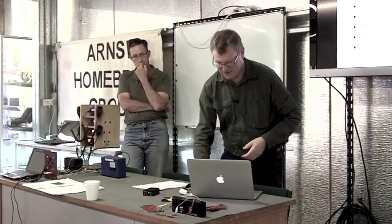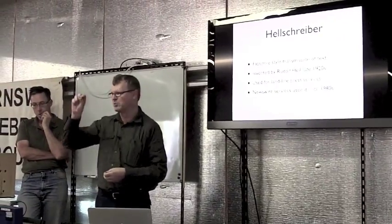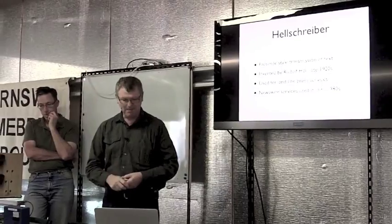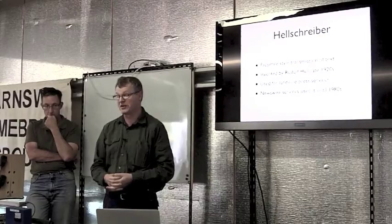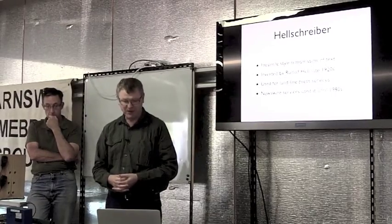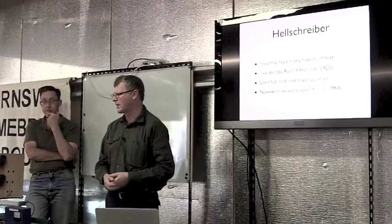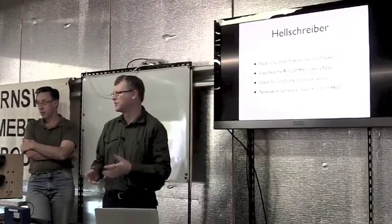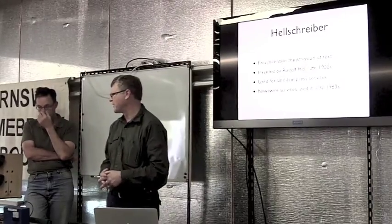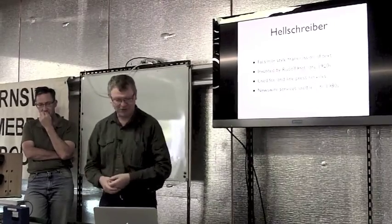Hellschreiber is a facsimile style transmission using a group of pixels. It was invented by Rudolf Helb in the late 1920s, patented in 1929, and has been used by press right up until the 1980s. One of the reasons is incredibly simple hardware - the receiver can be made with two moving parts.